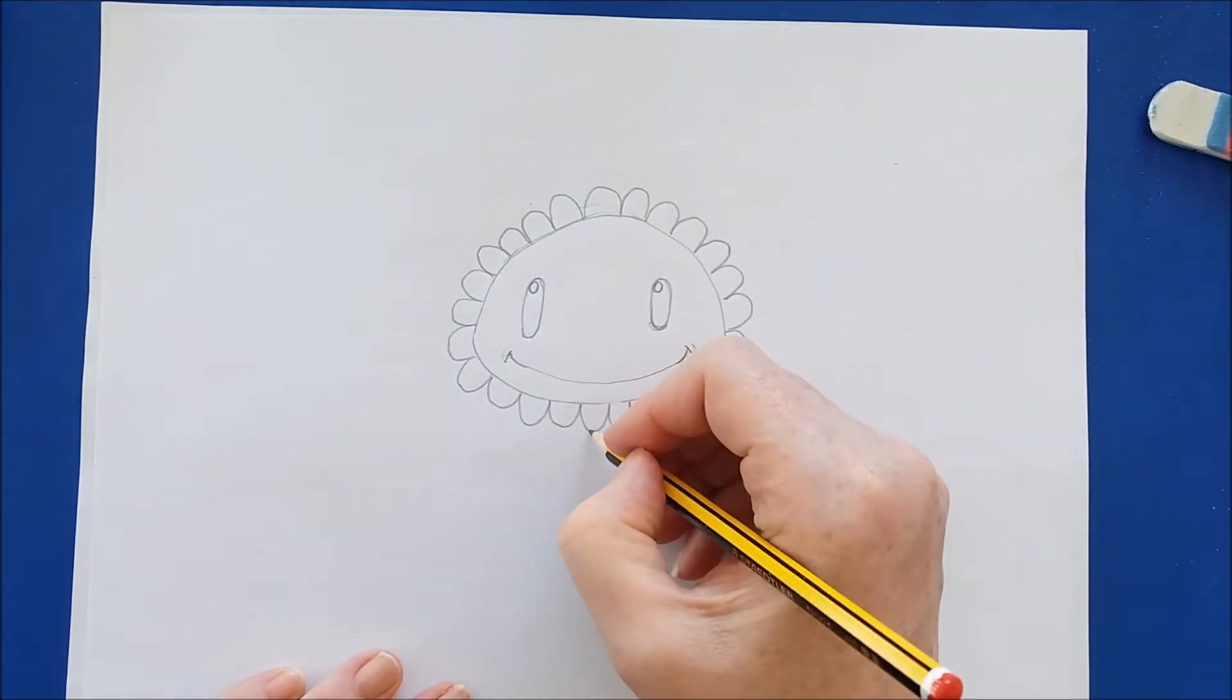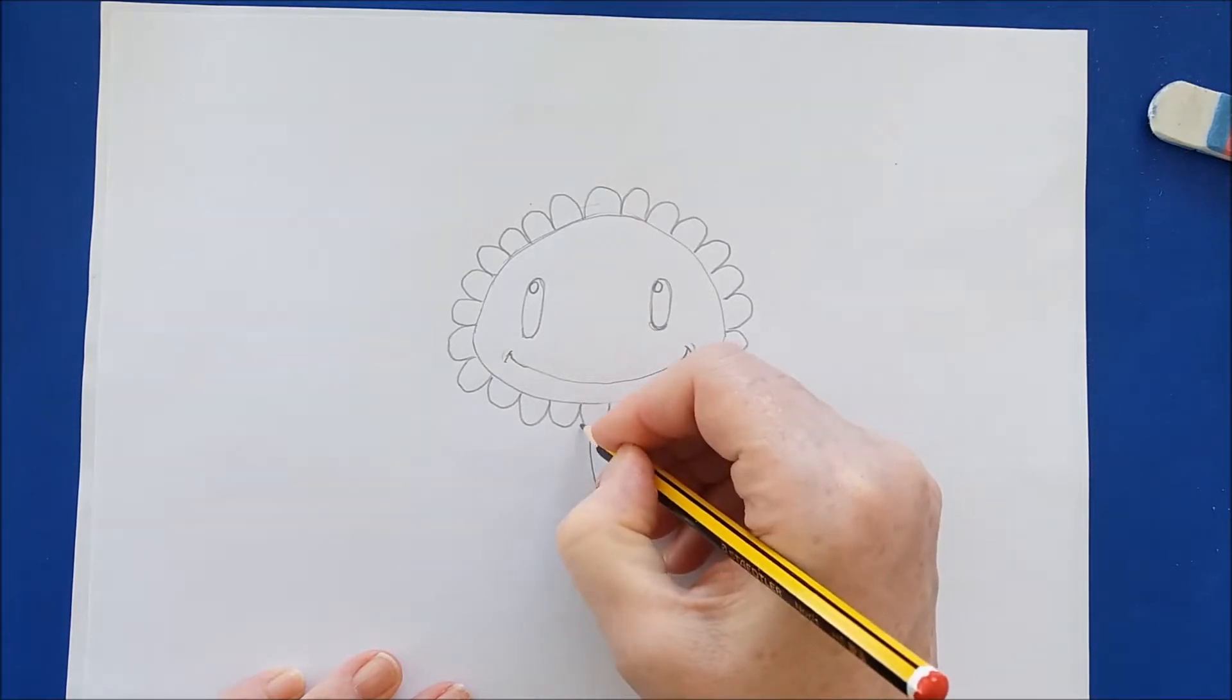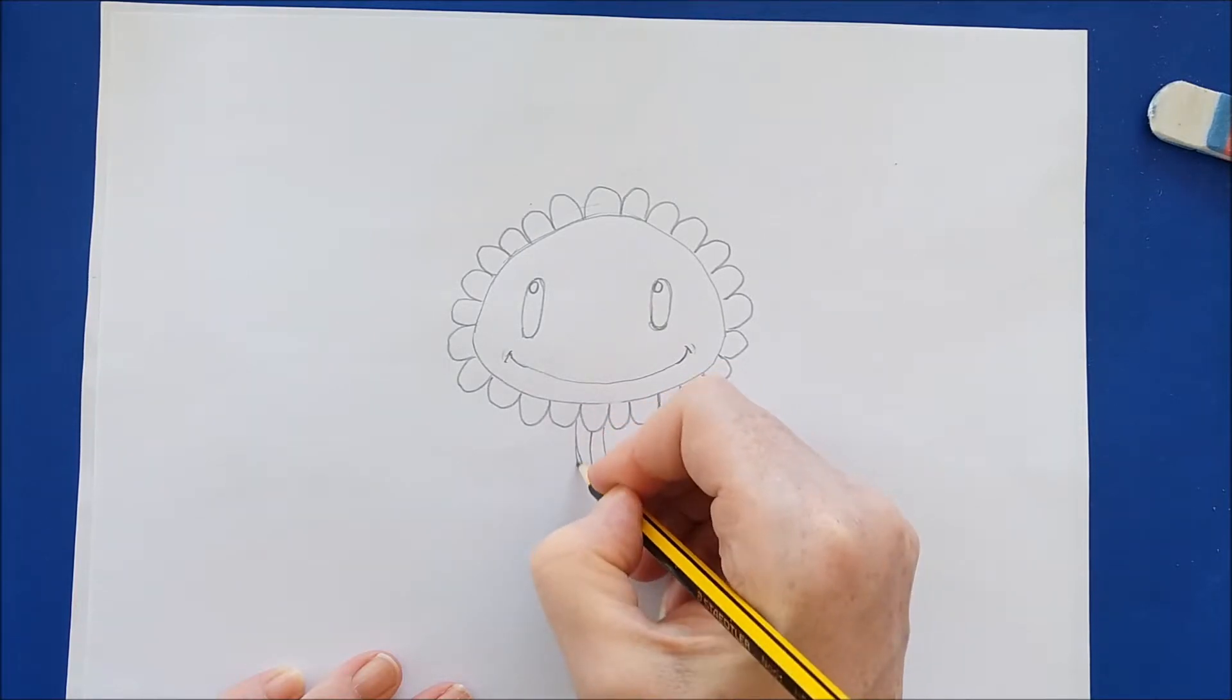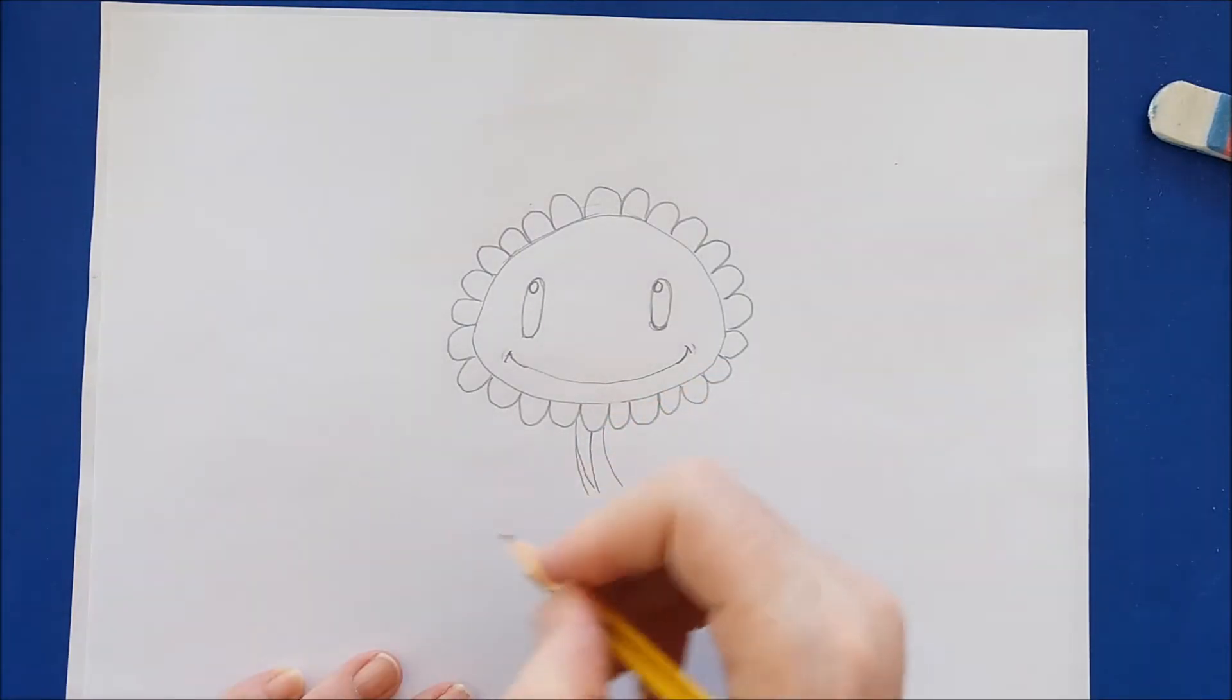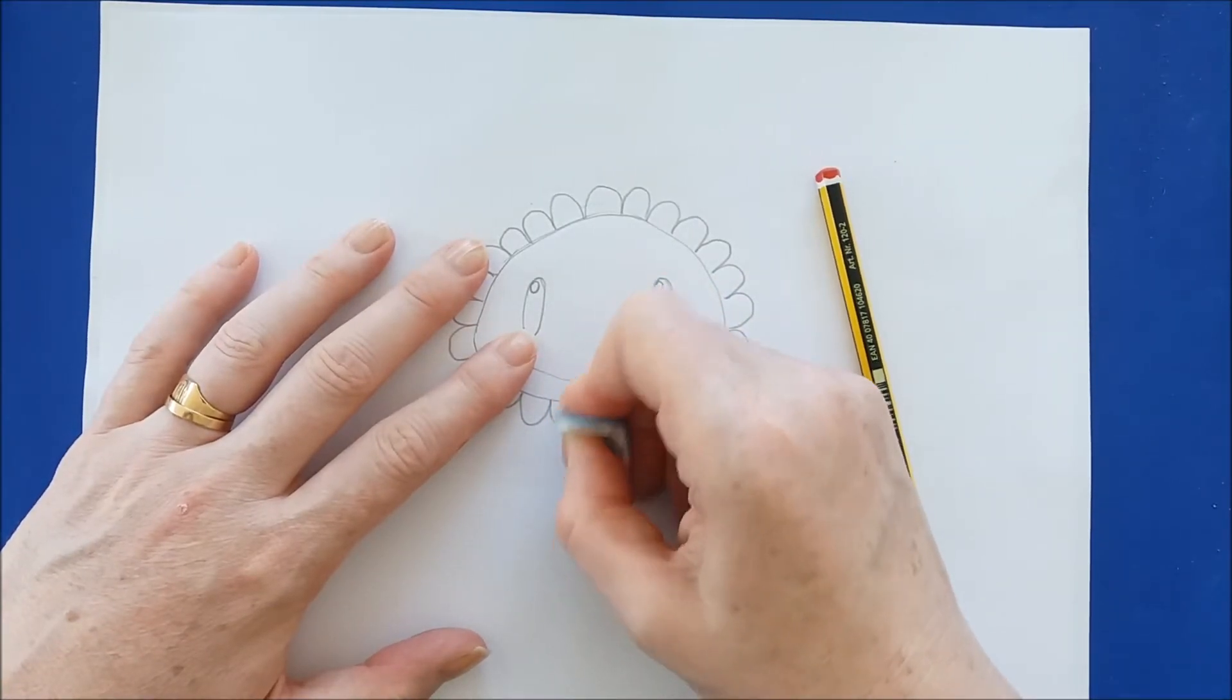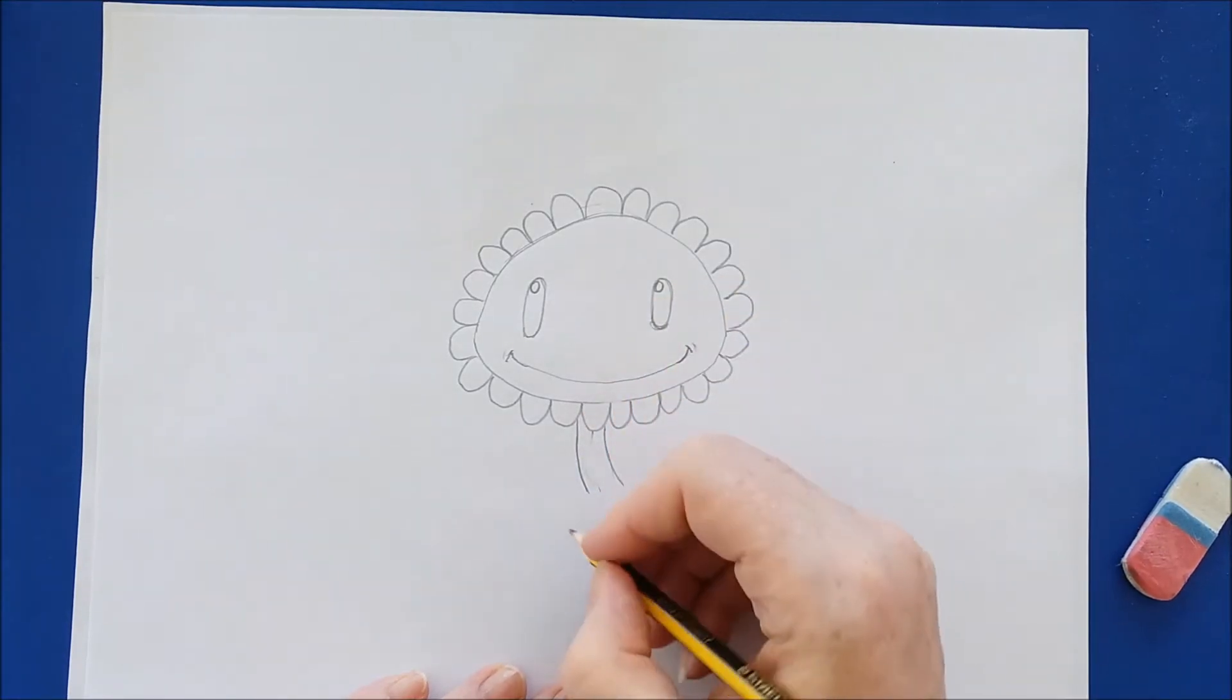Now I'll draw the stem in and the stem is just kind of a gentle curving line, two downward lines that will eventually have big leaves on the bottom. And there's the stem.